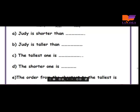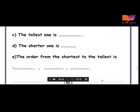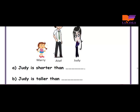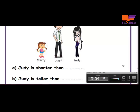Now he wants us to arrange them from the shortest to the tallest. The shortest is Mary, then Judy, then Atif. Super students! Now we are going to solve the rest of the questions by yourselves, and tell me if you want any question solved with you.